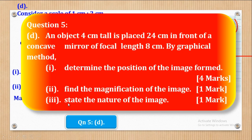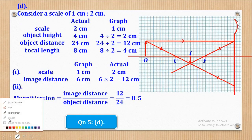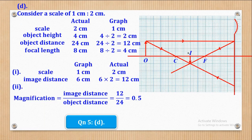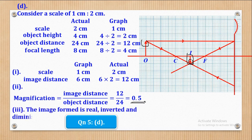Roman numeral 3 says: state the nature of the image formed. The image formed is real — because it is formed by actual intersection of light rays — inverted, because the object arrow is upward and the image arrow is downward, and diminished because the magnification is less than one. So the image is real, inverted, and diminished.